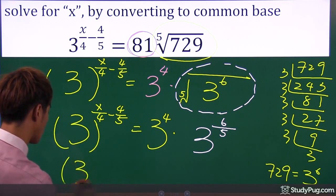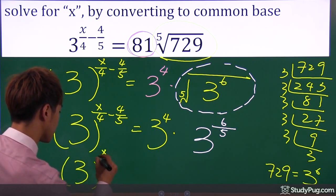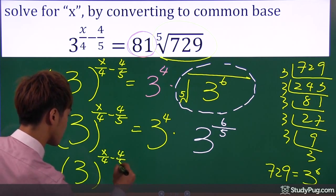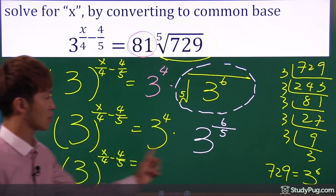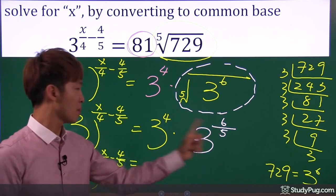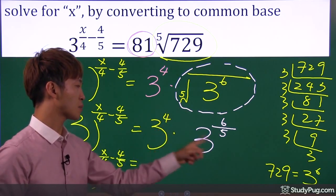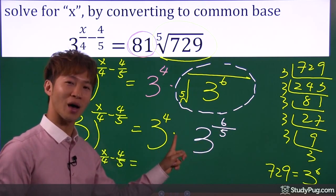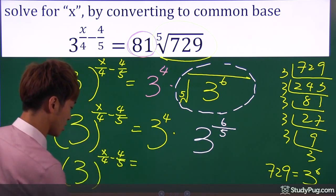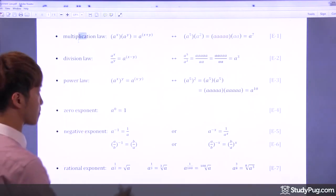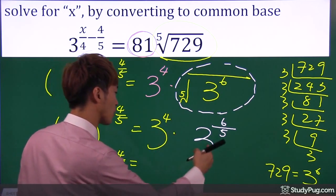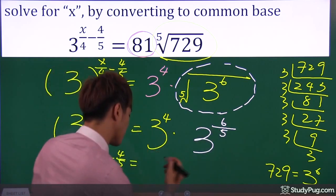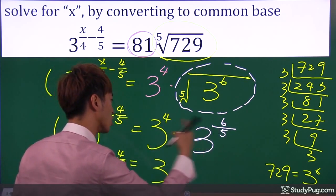Once again, we don't have to change anything on the left side. The left side is already base of three, so we're not going to do anything to it. But on the right side, now we have two numbers: base of three times base of three. So we have to apply the multiplication law.